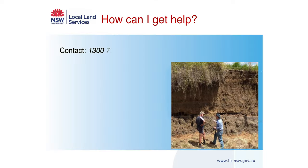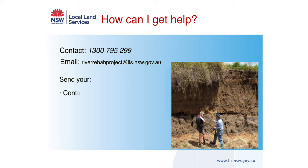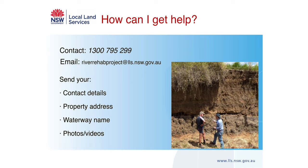For advice and support to manage riverbank erosion on your property, contact your local Land Services office by phoning 1300 795 299 or send an email to riverrehabproject@lls.nsw.gov.au. Send your contact details, property address and photos of the erosion site and we'll use that information to start doing an impact assessment. We'll call you to do an initial desktop assessment and if necessary, we may do a site visit before providing management recommendations.